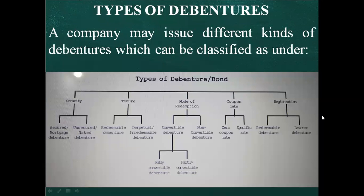Different types of debentures: a company may issue different kinds of debentures. They can be classified on the basis of security, tenure, redemption, coupon rate, and registration. On the basis of security: secured and unsecured debentures. On the basis of tenure: redeemable and irredeemable. On the basis of redemption: convertible and non-convertible. Based on coupon rate: zero coupon rate and specific rate. On the basis of registration: registered debenture and bearer debenture.